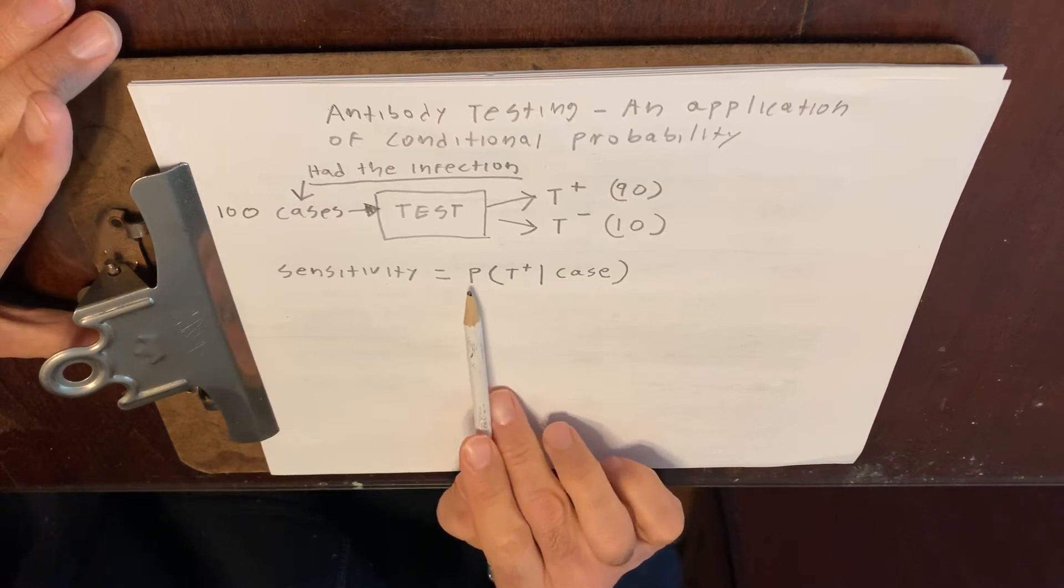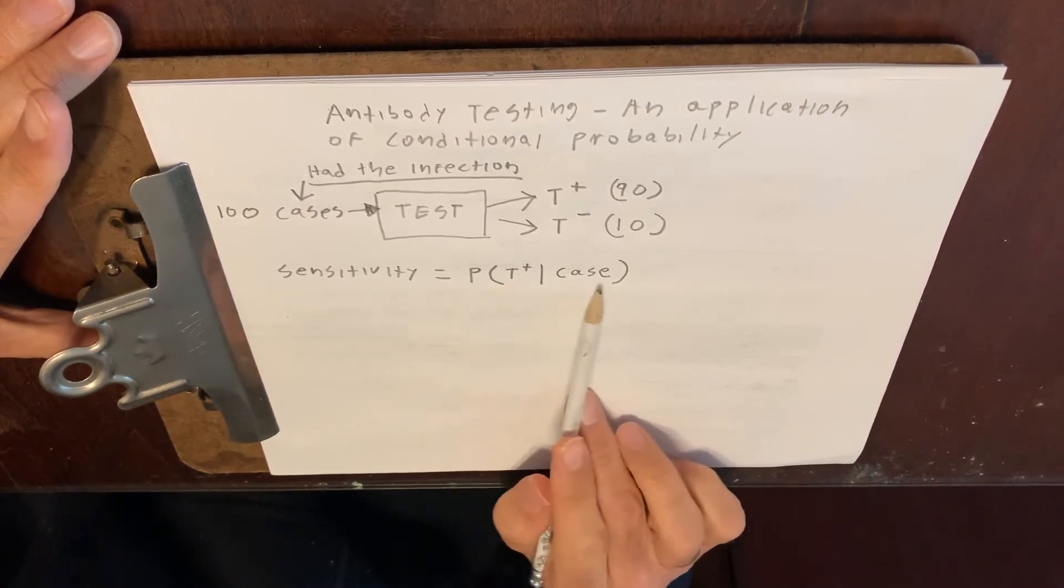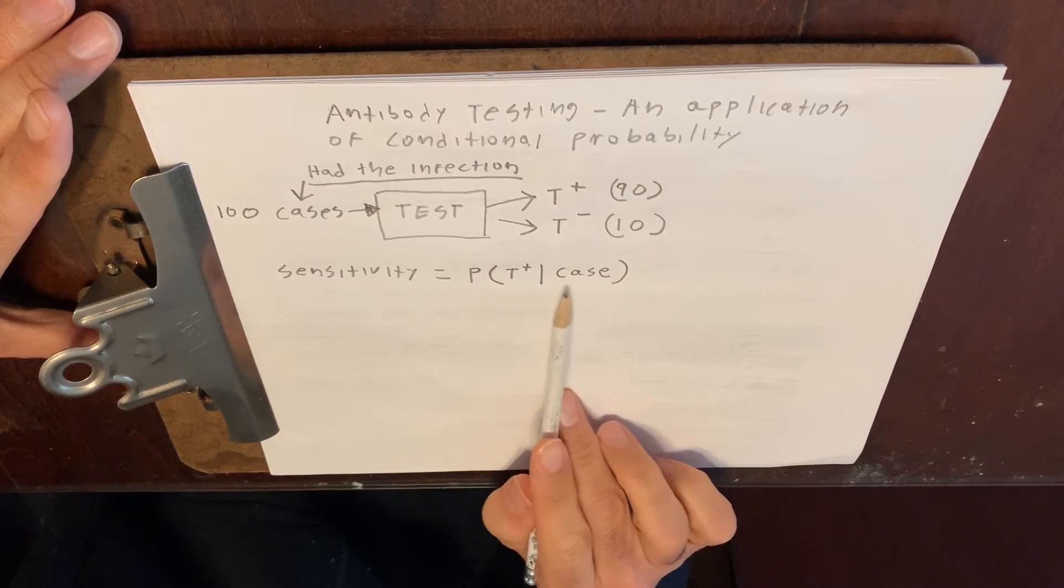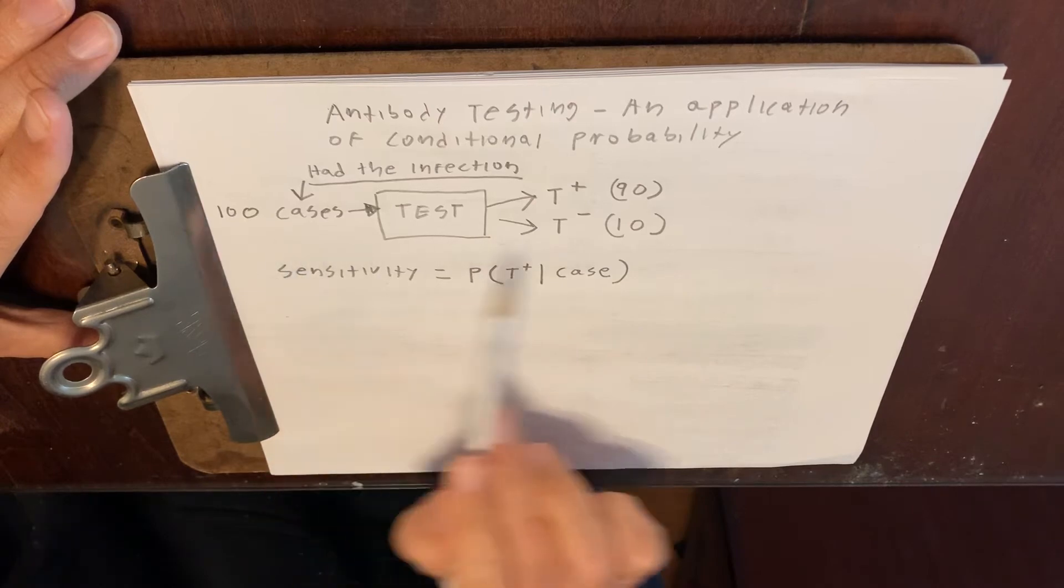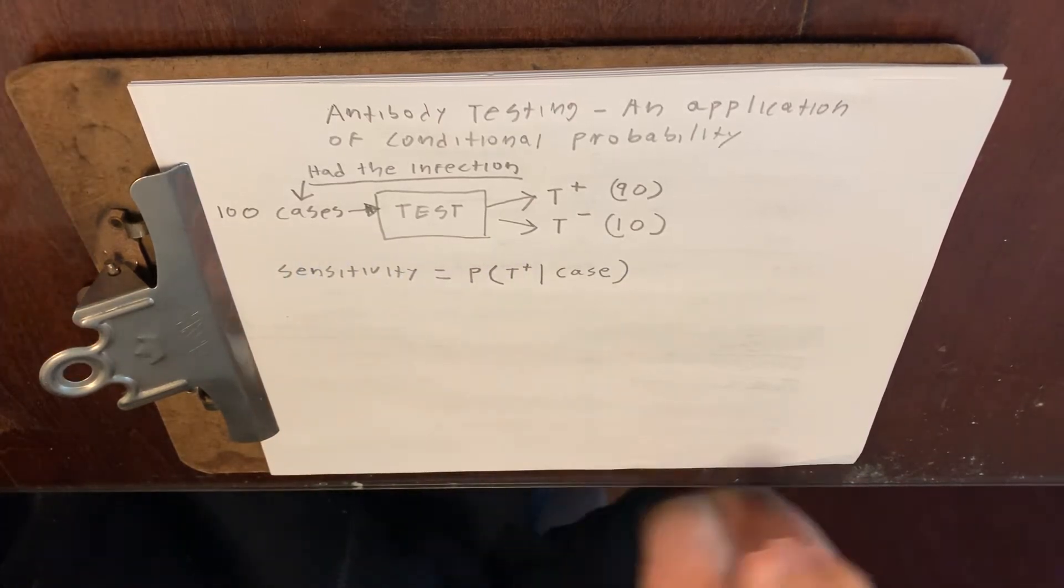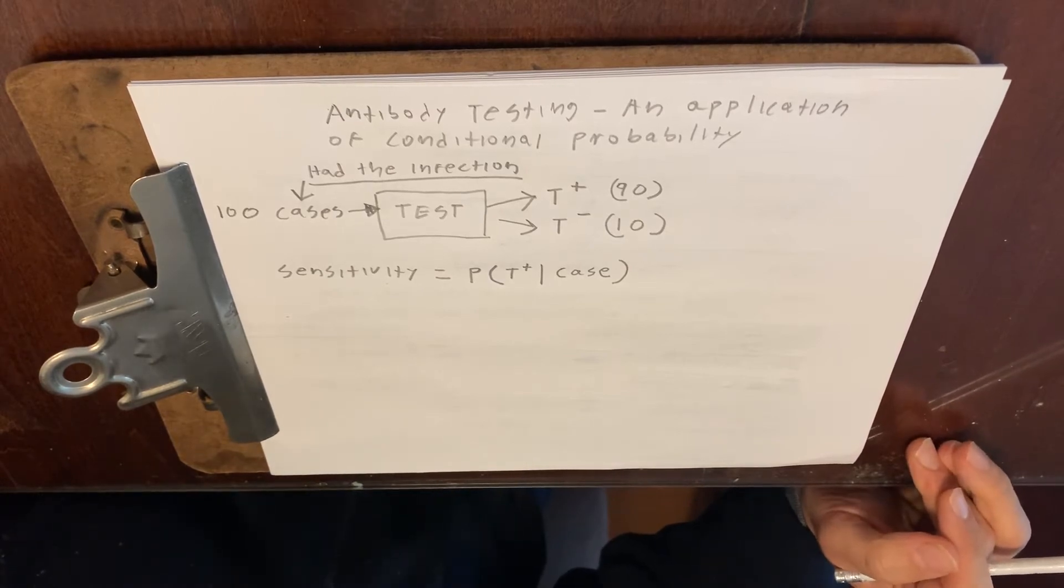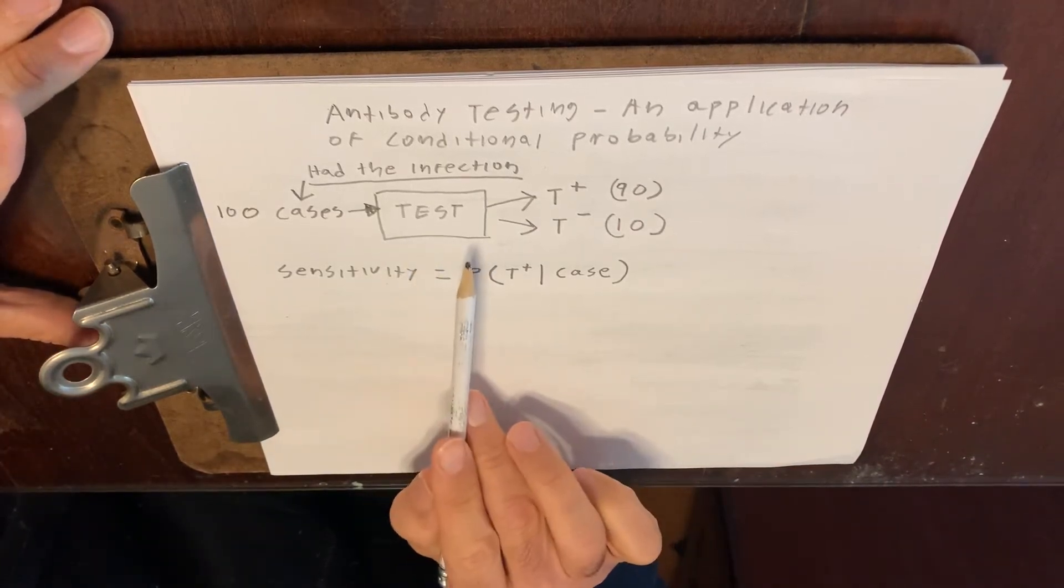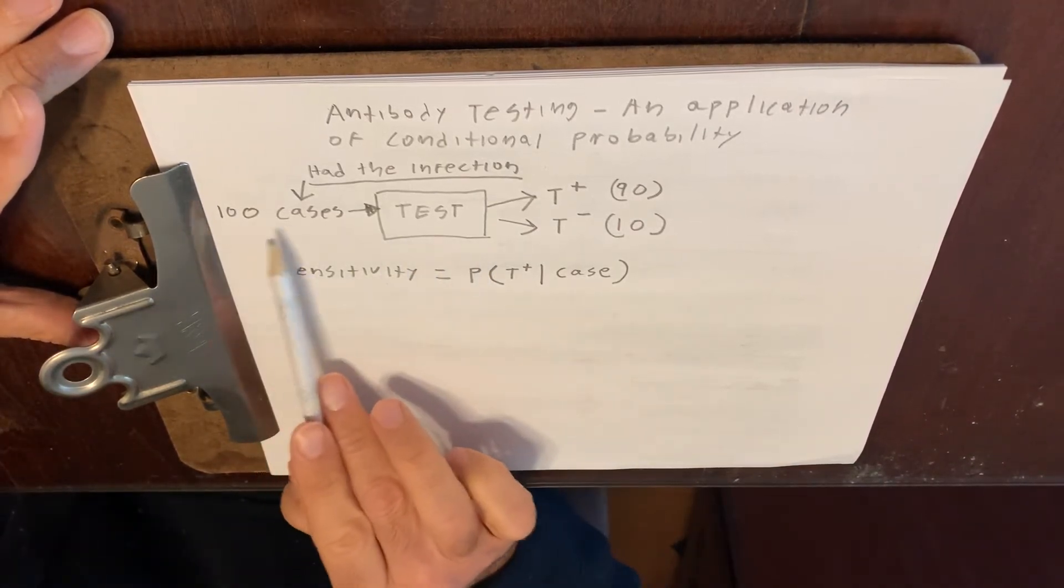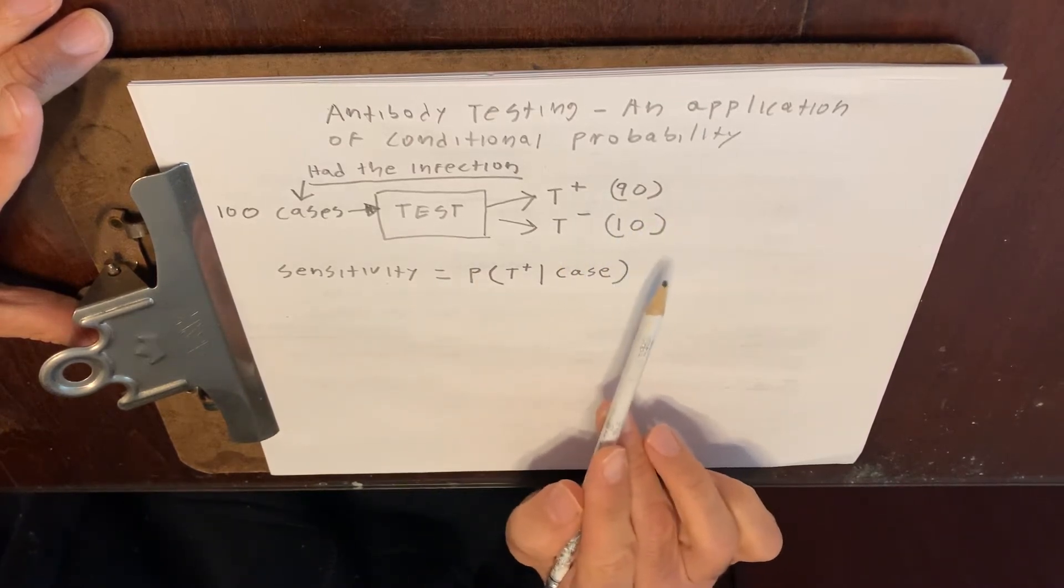It's the conditional probability that you'll get a positive test result for somebody that is known to actually be a case. And that's what we do when we have a nice new test on the market, let's say for some kind of, I don't know, hypothetically respiratory infection, maybe. We'll give a hundred cases the test and we'll count up how many positives we get and how many negatives we get.